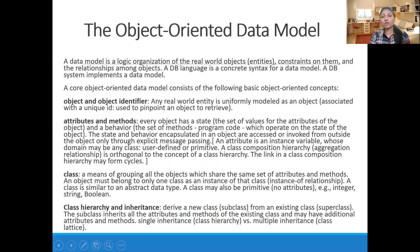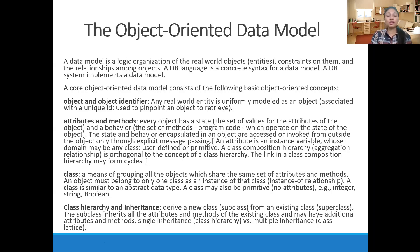First, we need to understand what an object-oriented data model is. A data model is a logical organization of real-world objects, also called entities, which have constraints on them and relationships among objects. In object-oriented programming, there is the concept of objects and classes, but no constraints or relationships.